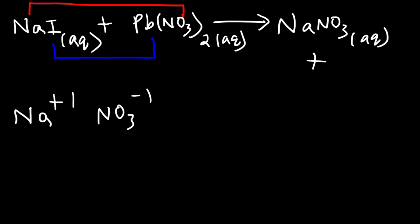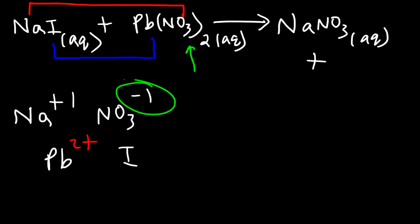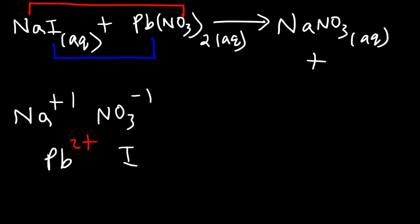To get the other product, we need to pair up lead and iodide. Lead has a two plus charge. The reason why it has a two plus charge and not a four plus charge is because there are two nitrates attached to it, and each nitrate has a minus one charge. So two nitrates have a total charge of minus two, and we only have one lead ion to counteract that, so that's why it has a two plus charge.